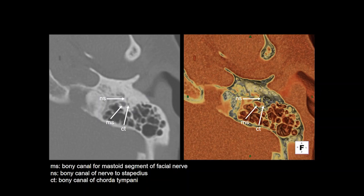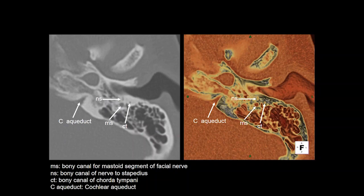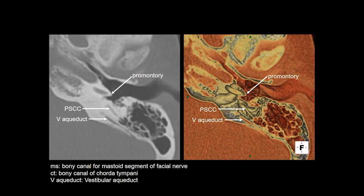Further cranially, you see the cochlear aqueduct — not to be mistaken for the internal auditory canal, as it is much smaller and has a relatively sharper anterior course. Going more cranially, you start seeing the basal turn of the cochlea; the impression produced is the promontory. The lucencies along the posterior and medial aspect of the petrous and mastoid portions of the temporal bone — the medial one is the vestibular aqueduct and the lateral one is the posterior semicircular canal. Roughly, the vestibular aqueduct should be of the same caliber as the posterior semicircular canal; if it is larger, you should suspect large vestibular aqueduct syndrome.